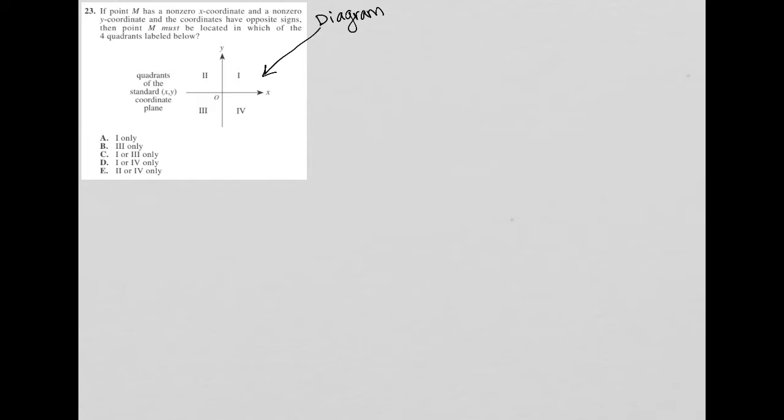The question says, if point M has a non-zero X coordinate and a non-zero Y coordinate, so it could be positive or negative. So let's just kind of go through.